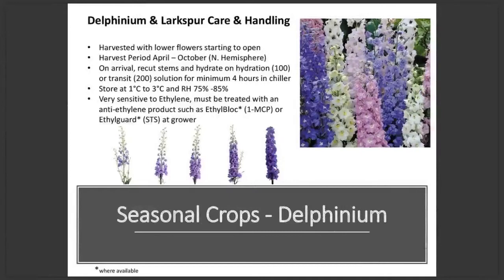Moving on to delphinium and larkspur: these are two very closely related genera, which is why we tend to put them together. These are probably as close to a blue flower as you will get in cut flowers. The most important thing to know about delphiniums is that they are very ethylene sensitive and they must be treated with an anti-ethylene product directly after harvest to prevent flower shatter. Other than that, you would follow general care and handling steps, storing them on a transit or hydration solution at one to three degrees.